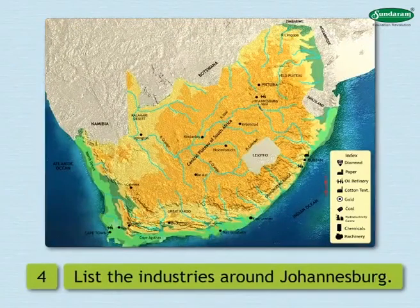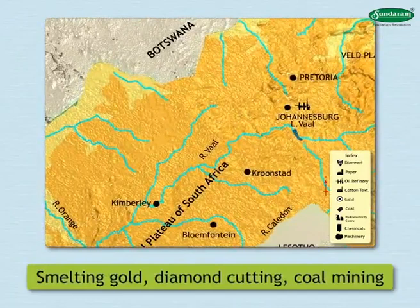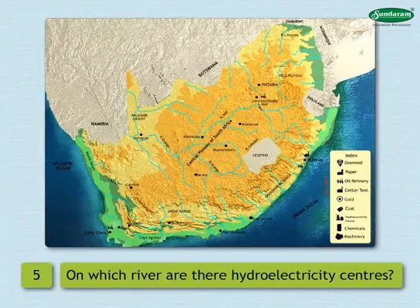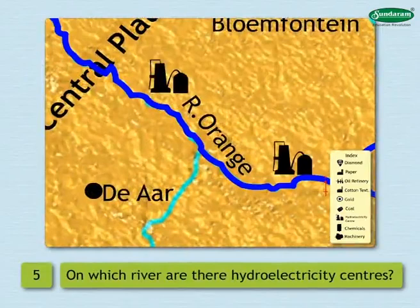4. List the industries around Johannesburg. Smelting gold, diamond cutting, and coal mining are the industries around Johannesburg. 5. On which river are the hydroelectricity centers? The hydroelectricity centers are on the Orange River.